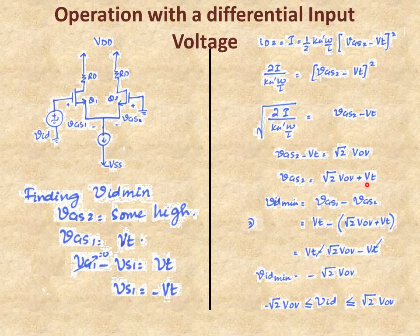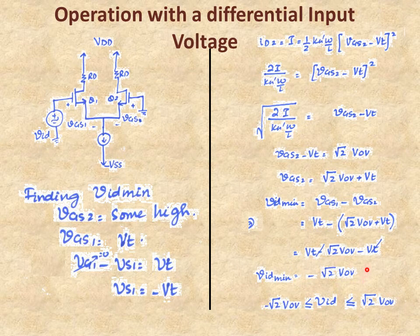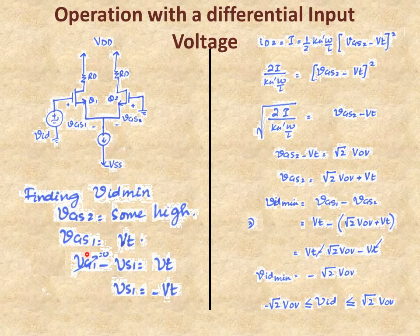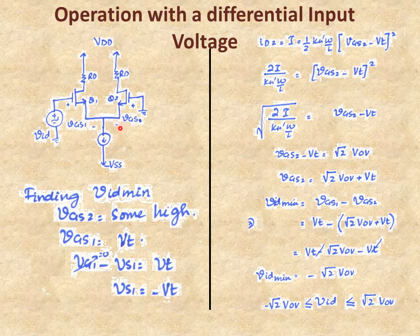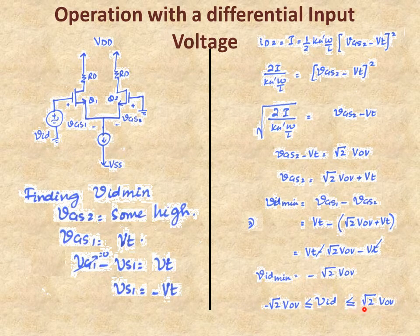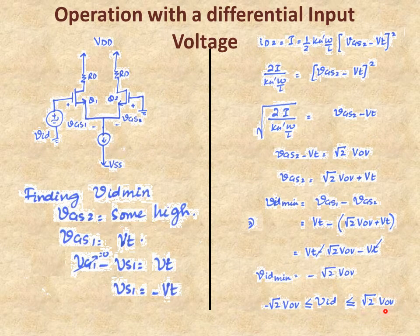VID_min = VGS1 minus VGS2 = VT minus (root(2)×VOV + VT) = minus root(2) × VOV. Setting VID to minus root(2) × VOV automatically sets VGS1 = VT (Q1 off) and VGS2 = root(2)×VOV + VT, shifting all current to Q2. So to switch current between Q1 and Q2, vary VID between minus root(2)×VOV and plus root(2)×VOV.